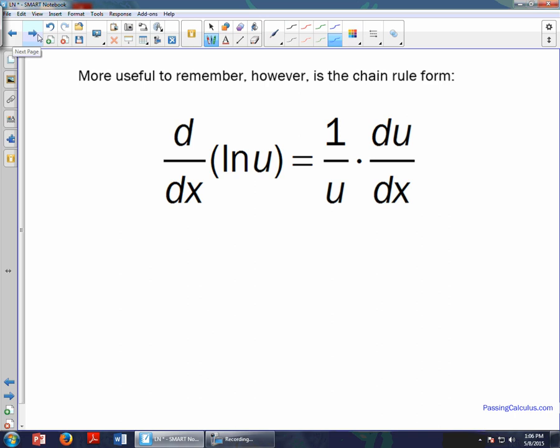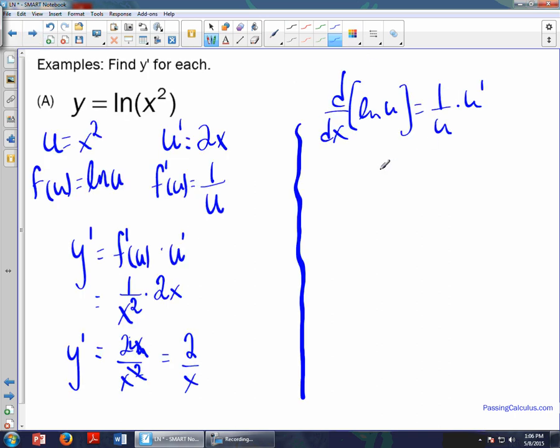So du over dx is the same as u prime. So if you look what I have, my u is x squared, so I end up with the derivative, or y prime, is equal to 1 over what's inside of here, x squared, times the derivative of x squared which is 2x. So this one works out really simple. So I jump right to this step right away and then it's just a matter of reducing, and we know that reduces down to 2 over x.